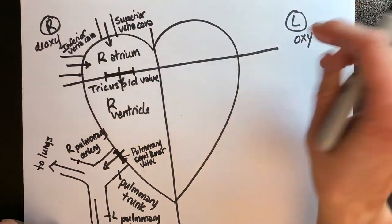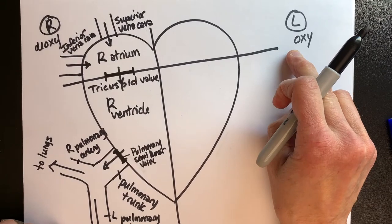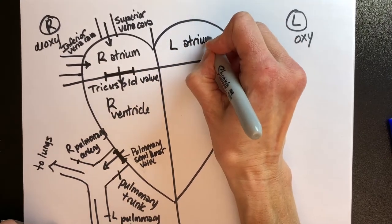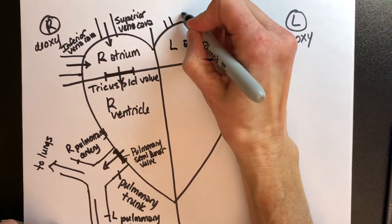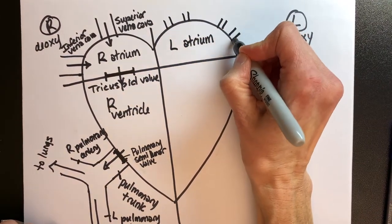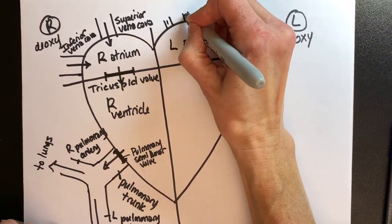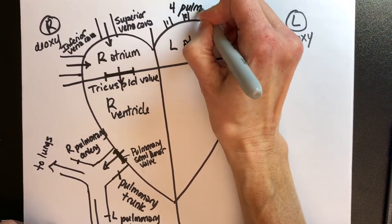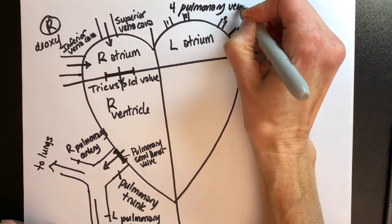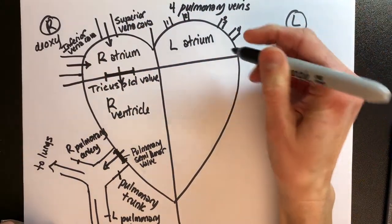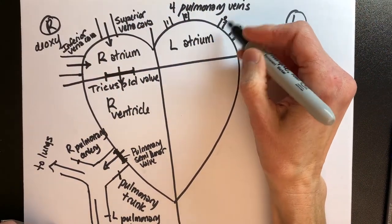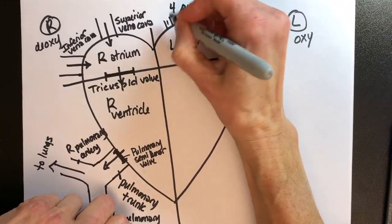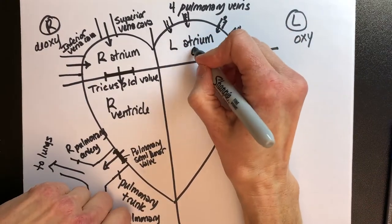Now we can come back to the heart on the oxygenated side. We can only return through a vein, and we're going to come into the left atrium. The left side is our oxygenated side. These are going to be the four pulmonary veins — two from the right lung, two from the left — and you'll see their entrances on the plastic heart model. The four pulmonary veins carry oxygenated blood from the lungs back into the heart, entering upstairs on the left side: the left atrium.